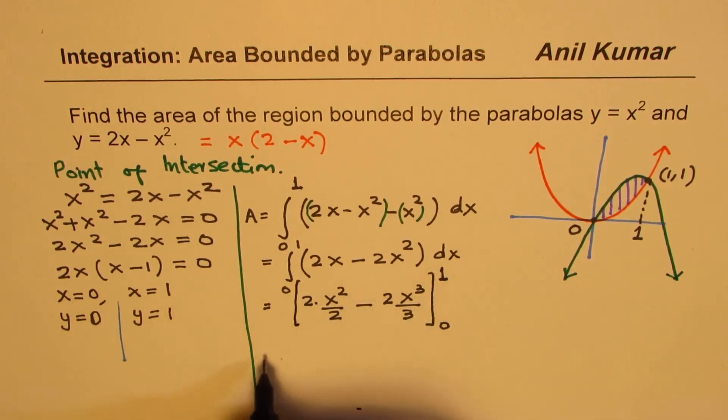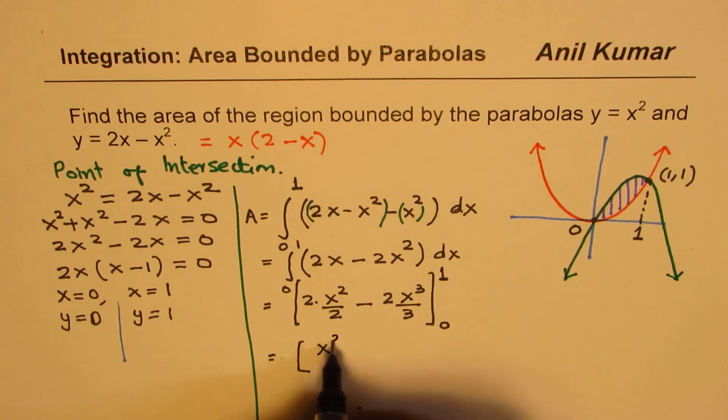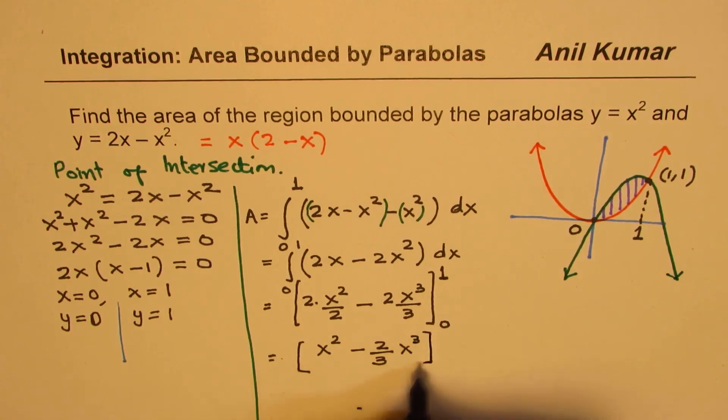Now, if I write, we could actually simplify this. It's better to simplify. Cancelling 2s, we get x squared minus 2 over 3, x cubed.